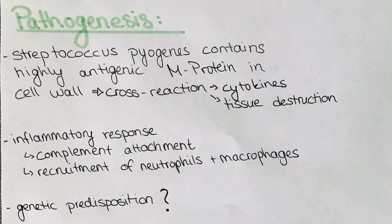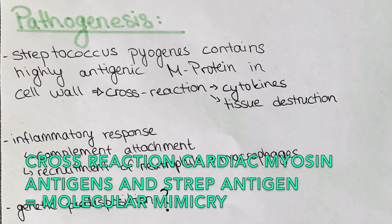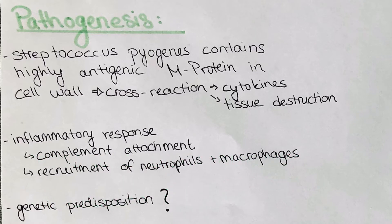This leads to a cross-reaction with the body's own antigens because of molecular mimicry — the antigens look very similar and the body can mismatch them. This leads to cytokine production and tissue destruction at different sites of the body which also contain these antigens.